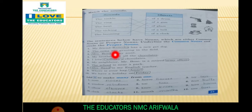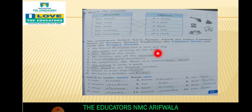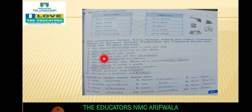My friend Ramesha has a new pet dog. Ramesha کو circle کیوں کیا؟ کیونکہ وہ proper noun ہے - کسی خاص شخص کے بارے میں بات ہو رہی ہے۔